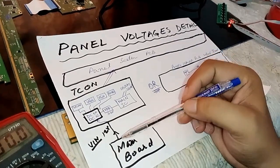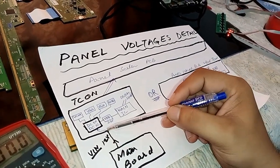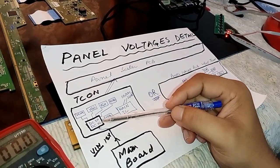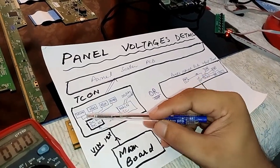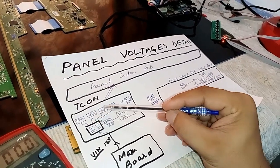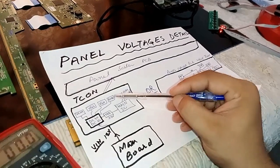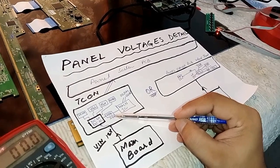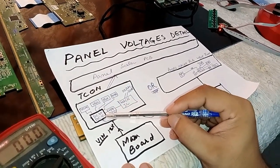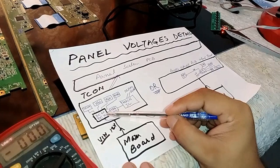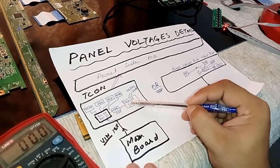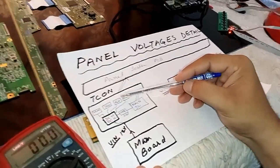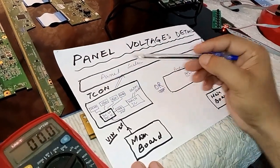From the mainboard, 12V or 5V goes into the T-Cone, directly into the DC-to-DC IC. It generates these voltages: VCOM, VGL, VGH, AVDD, and VDD. In some cases VDD is generated by a separate regulator, and in many cases also by the DC-to-DC IC. This VDD goes into the main IC on the T-Cone, and then all voltages go to the panel scaler.